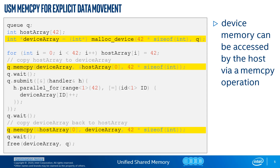Let's look at a simple code showing explicit data movement. We create a queue with the default constructor so a default device selector is used. We create a host array on the stack and initialize it. We also allocate memory on the device via malloc_device, getting a pointer device array. There is a kernel that operates on a device allocation using this pointer. Data is copied explicitly between host array and device array before and after the kernel executes using memcpy operations. We call wait to ensure the copy to the device has completed before the kernel executes, and to confirm the kernel has completed before data is copied back to the host.